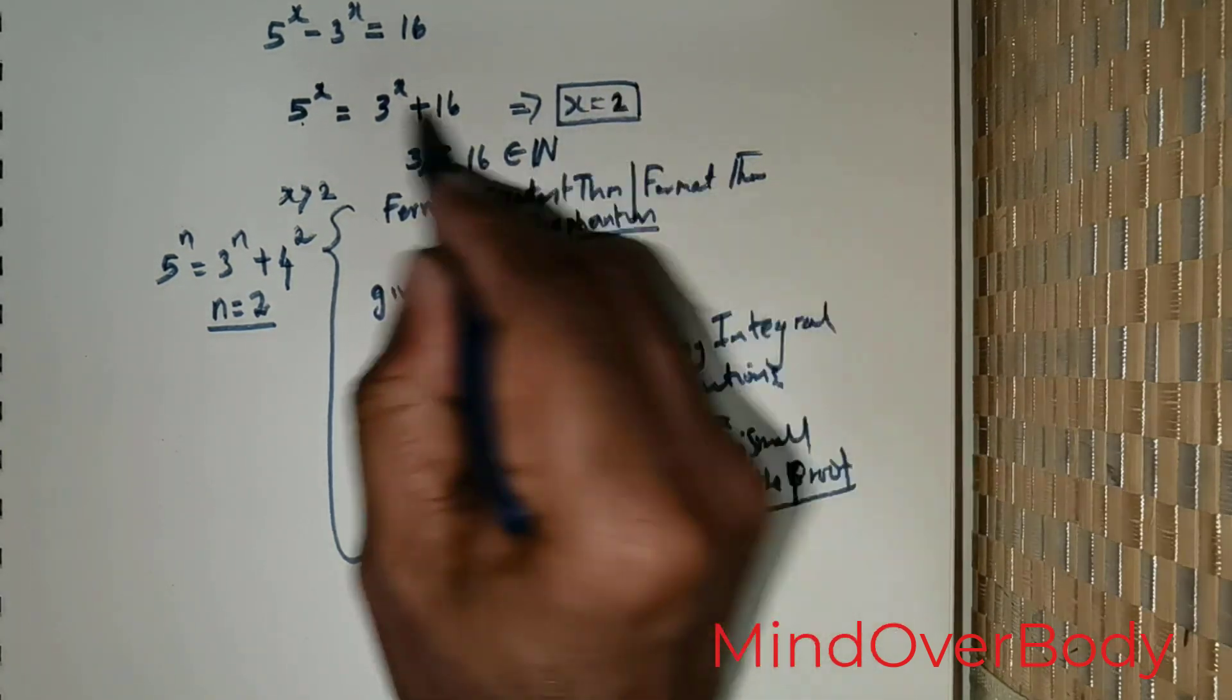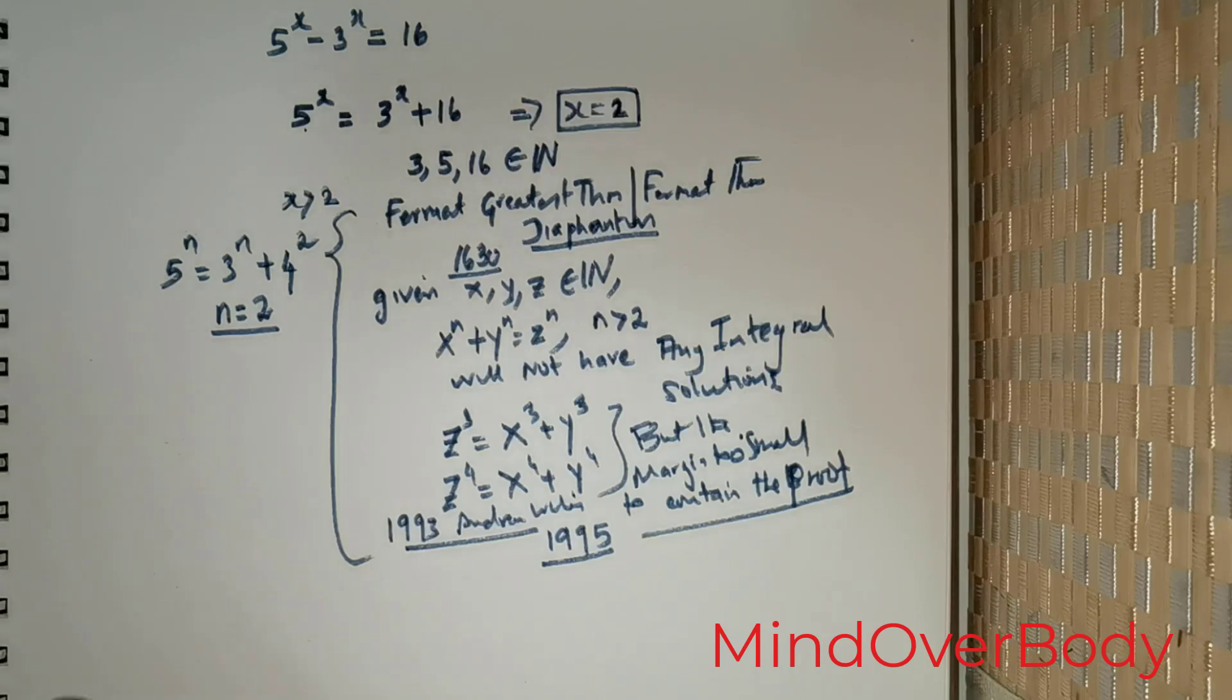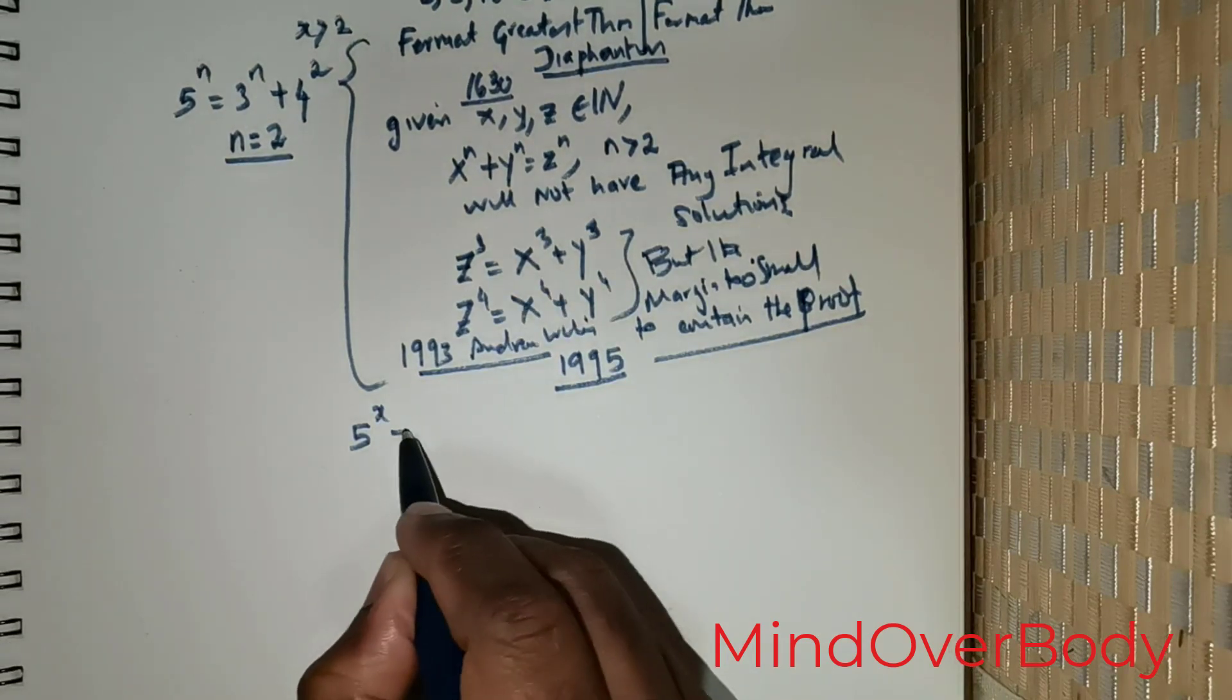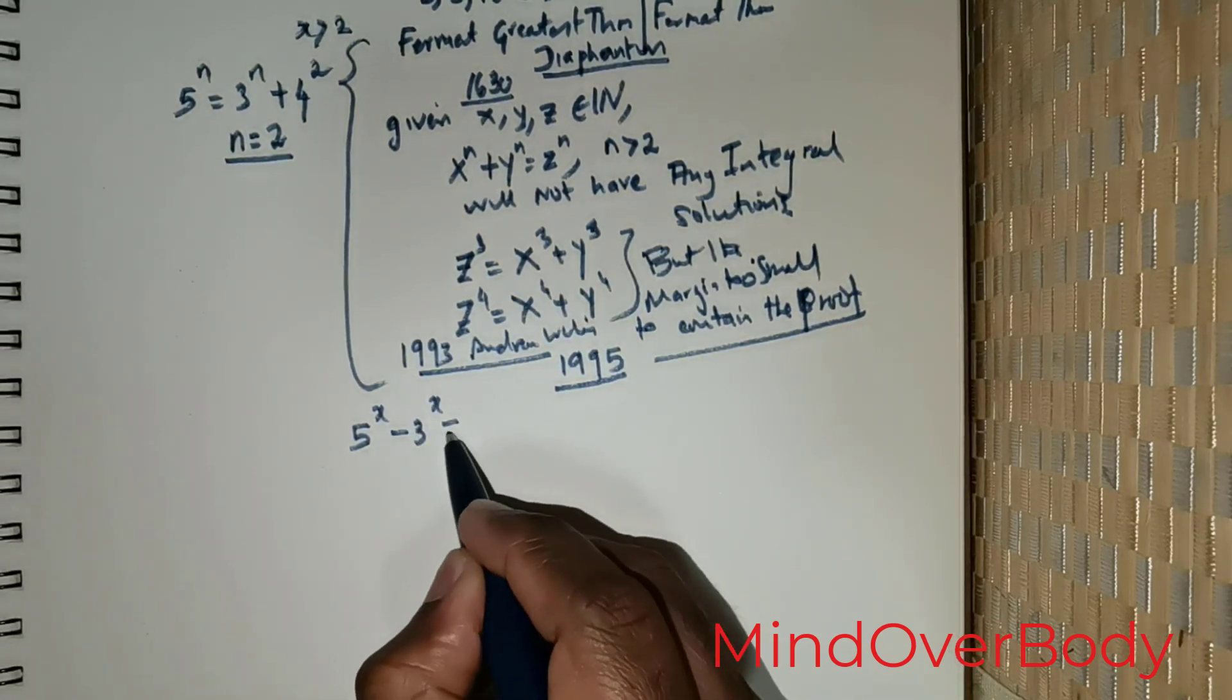Now let us look into this proof in a different angle. Let me consider 5^x - 3^x = 16.